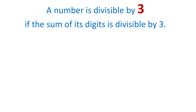A number is divisible by 3 if the sum of its digits is also divisible by 3. For example, the number 42 is divisible by 3 because if we add the digits 4 and 2, we get 6, and 6 is also divisible by 3. Then 42 divided by 3 is 14.